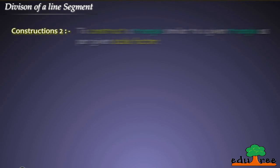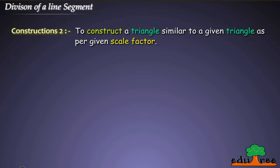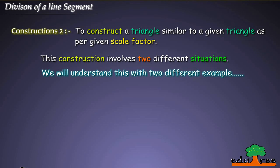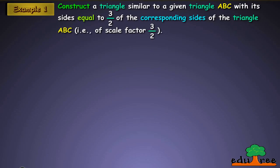Constructions to construct a triangle similar to a given triangle as per given scale factor. This construction involves two different situations. We will understand this with two different examples. Example 1: Construct a triangle similar to a given triangle ABC with its sides equal to 3/2 of the corresponding sides of the triangle ABC, that is, of scale factor 3/2.